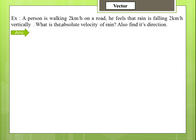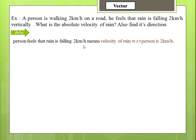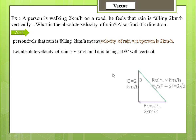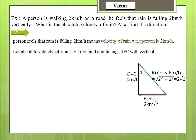Another example: A person is walking at 2 kilometers per hour on a road. He feels that rain is falling at 2 kilometers per hour vertically. What is the absolute velocity of the rain? Also find its direction. The person feeling that rain falls at 2 km/h vertically means the velocity of rain with respect to the person is 2 km/h. Let the absolute velocity of rain be v km/h, falling at theta degrees with the vertical.